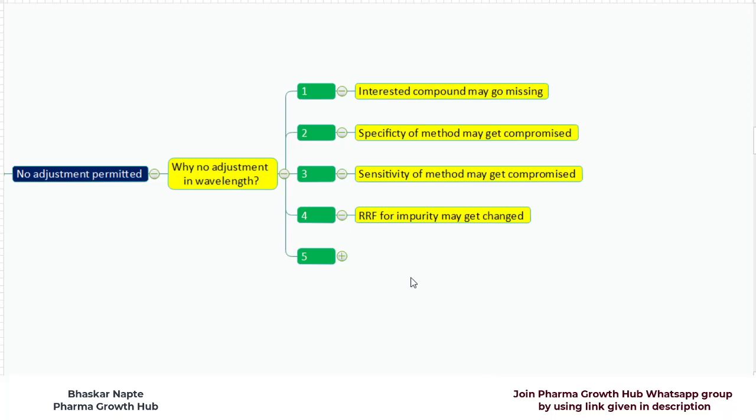Point number 4 is the relative response factor or RRF for impurity may get changed. If the UV spectra of impurity and UV spectra of your principal compound or drug substance are not similar, they can have a different absorption at different wavelength. This difference in absorption value can change the response factor for your impurities.